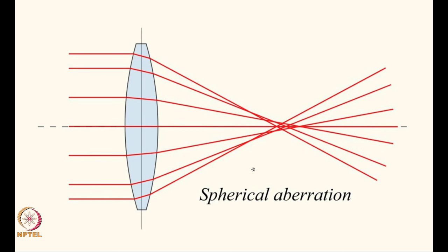That means there is no place where I could place a projection screen — moving it back and forth — such that everything would be perfectly in focus. If I just use the central part of the lens it would be good enough, but if I really insist on using all of the lens, all the way out to the exterior, the errors tend to get worse and worse.